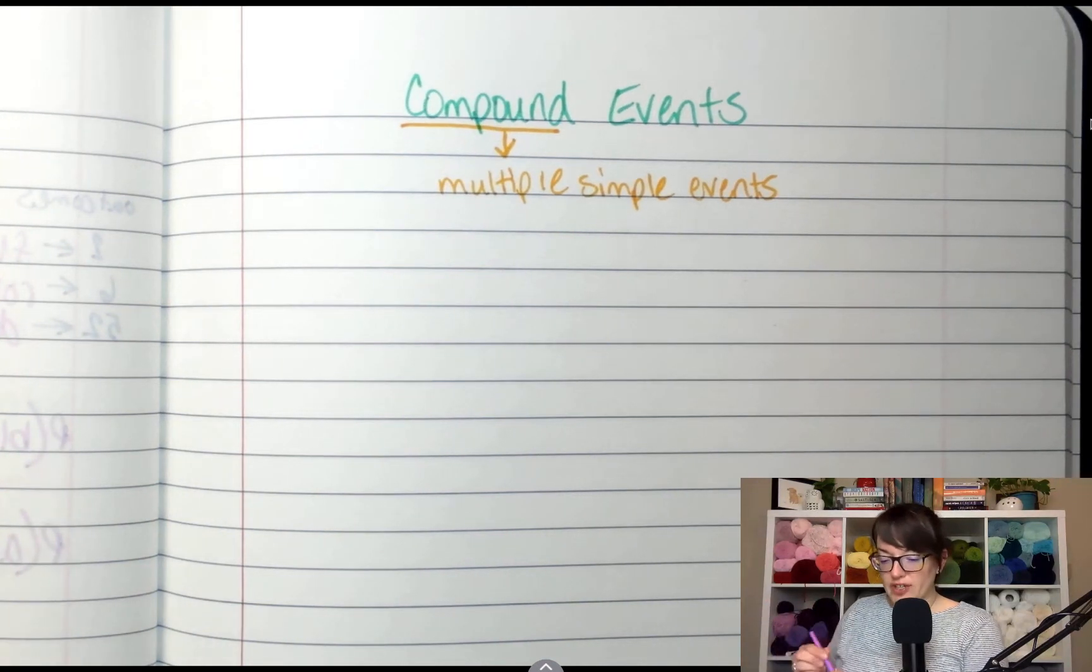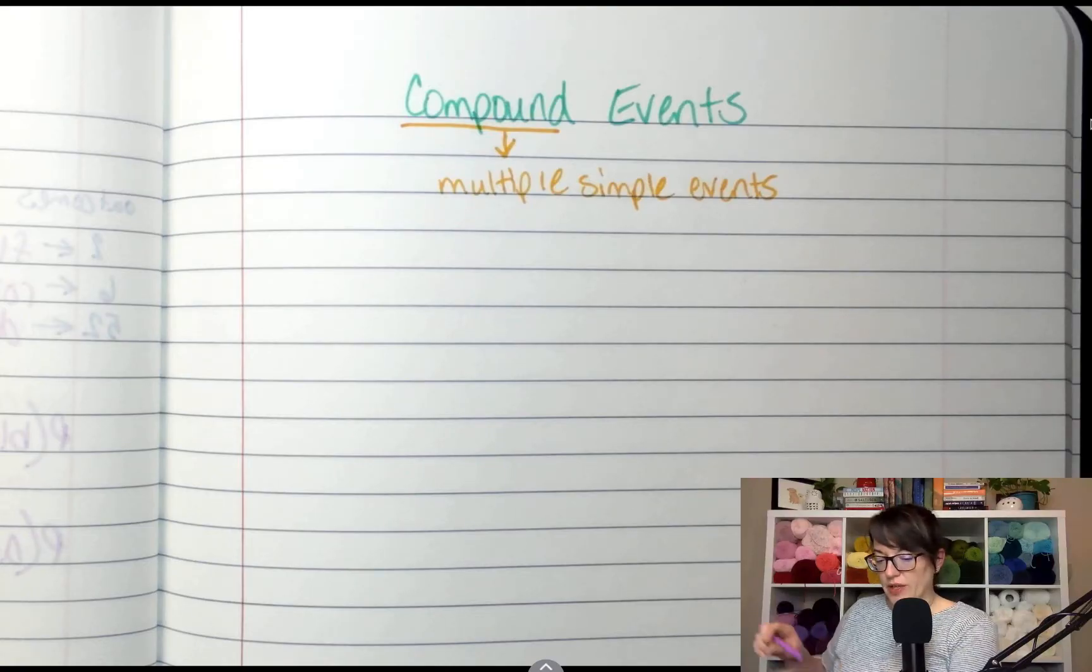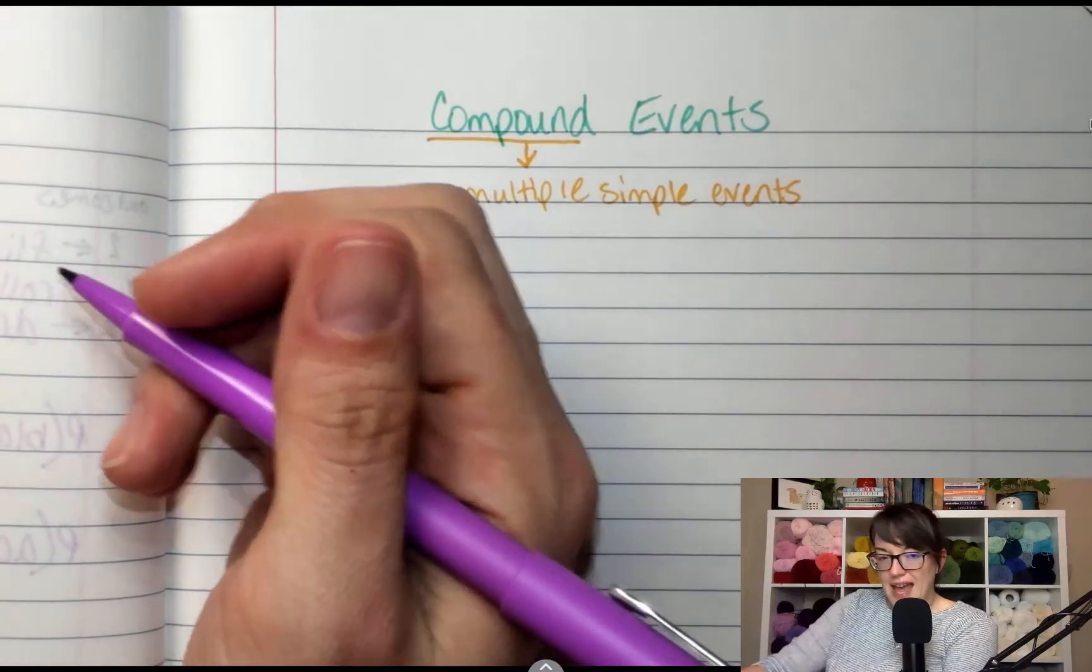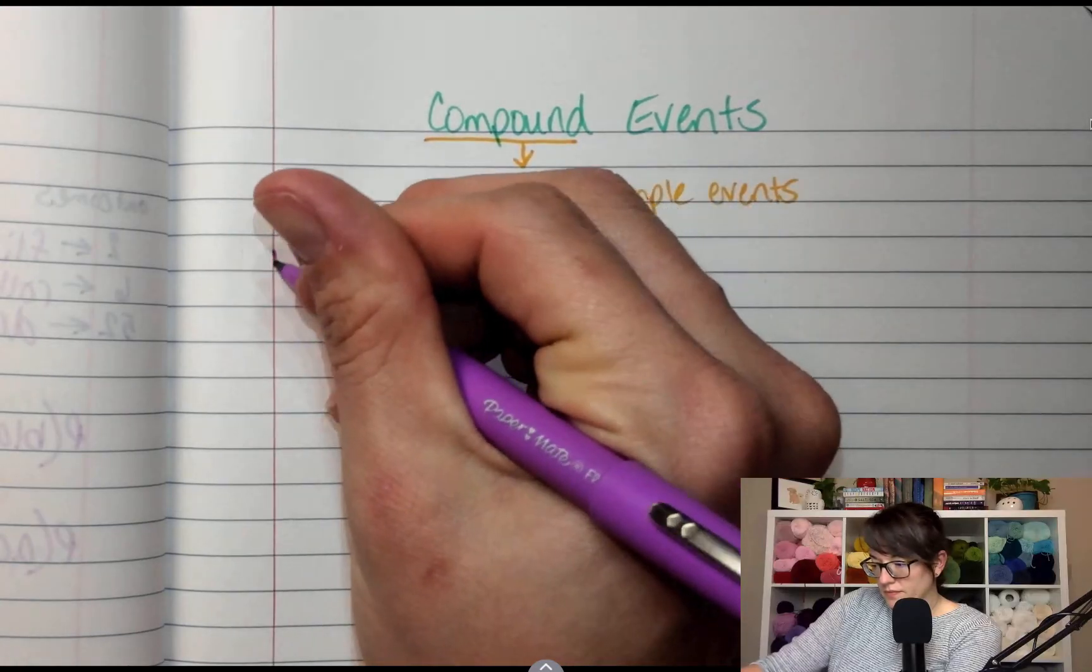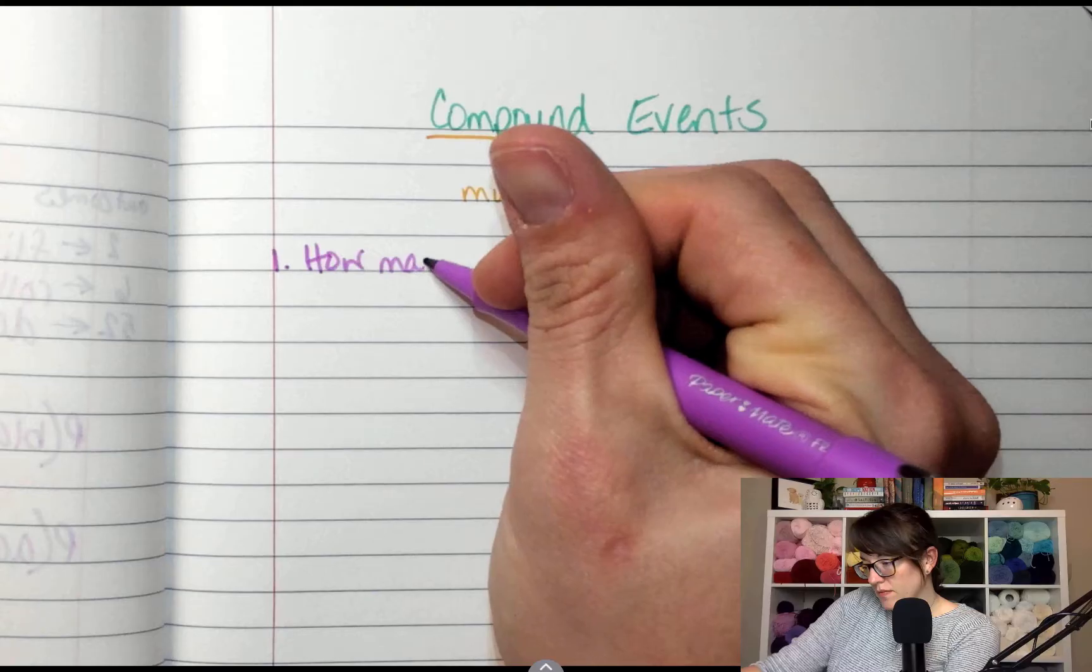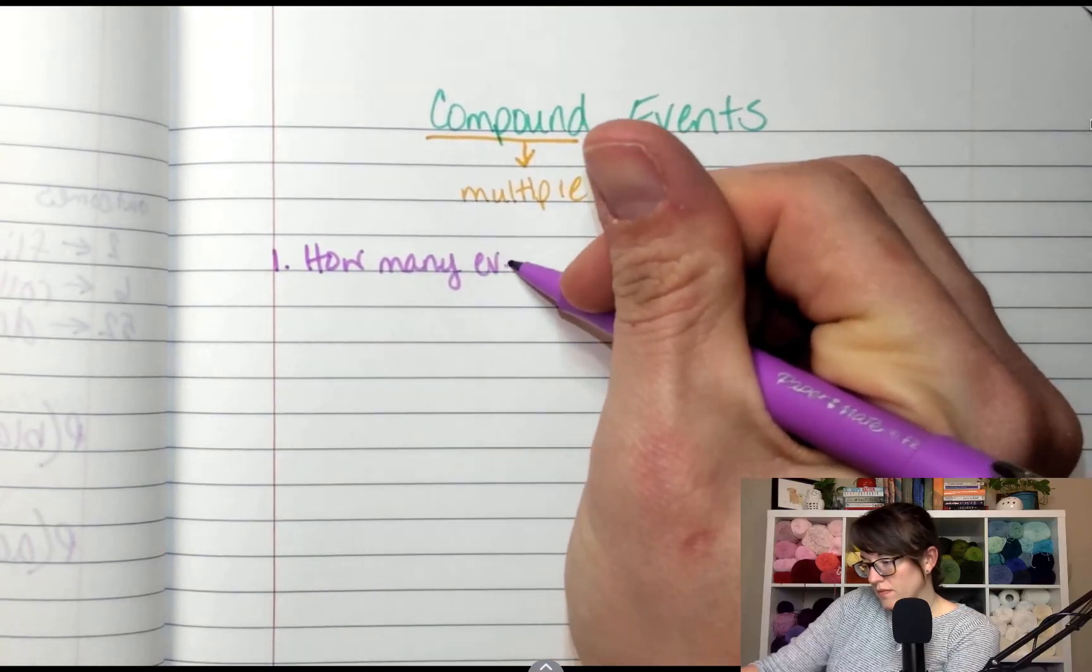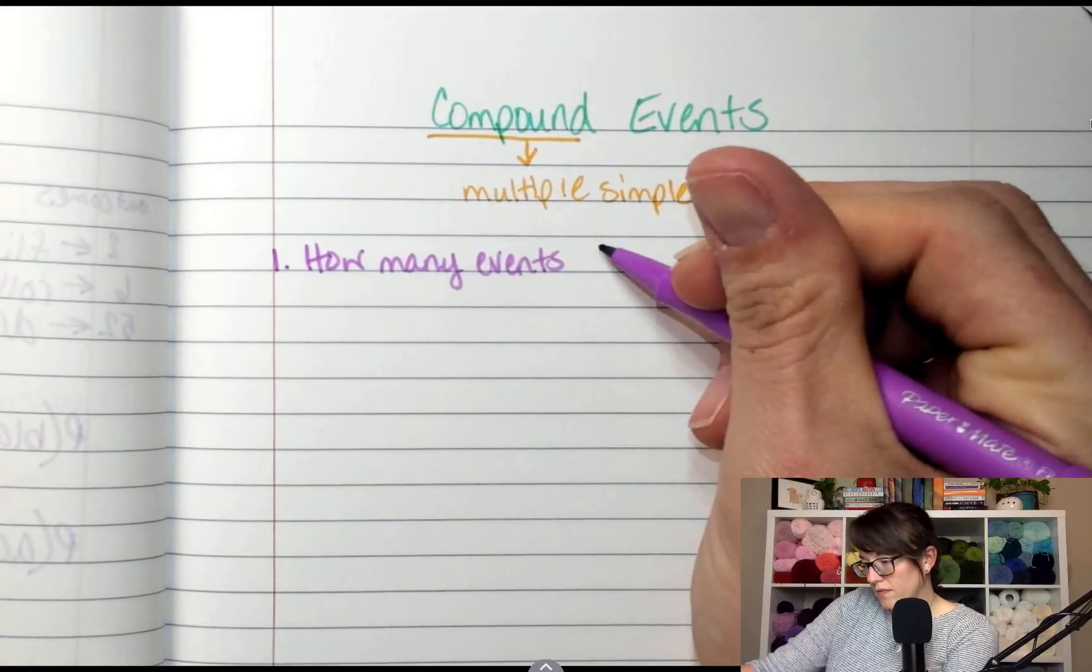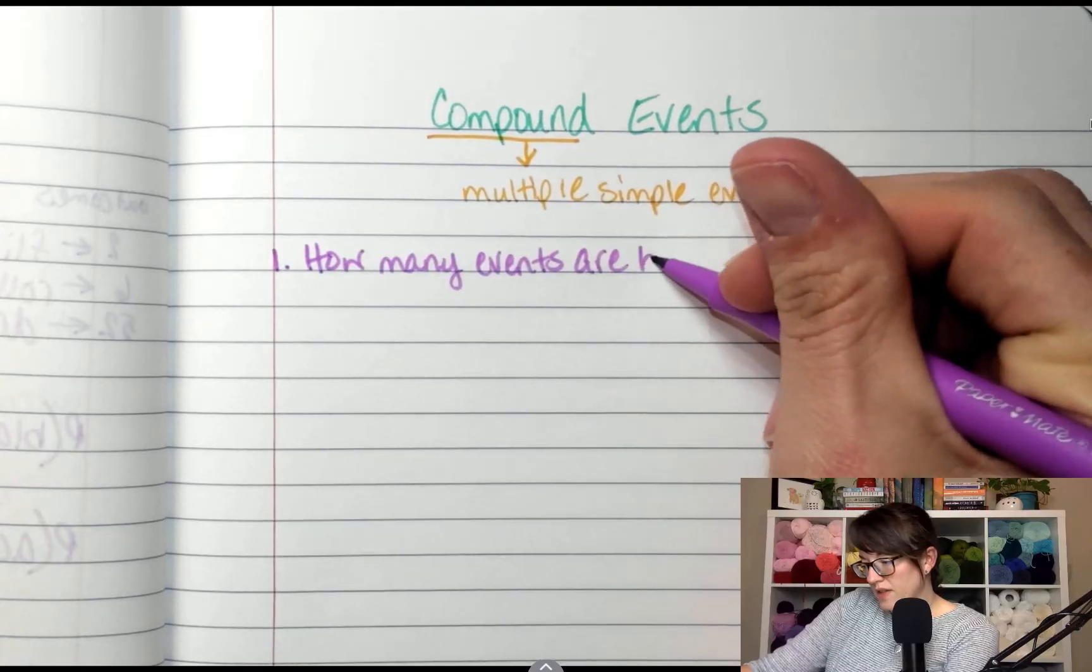So the first thing that you're going to have to ask yourself is how many events are happening? How many events are happening?